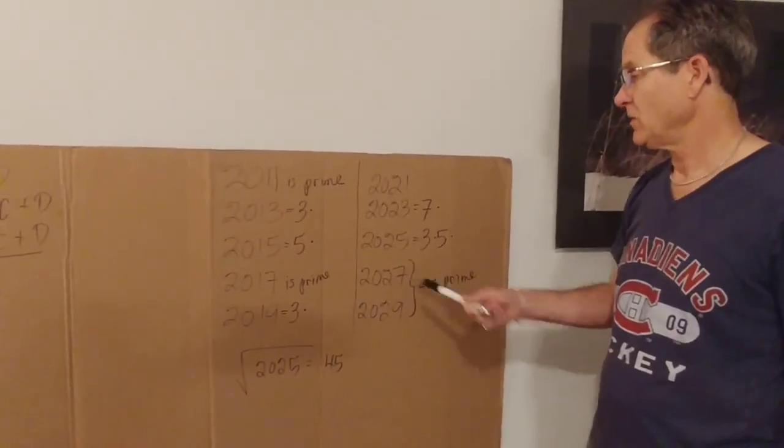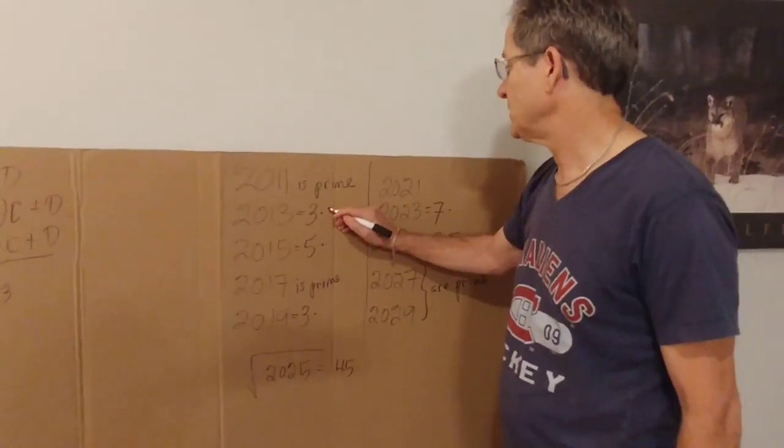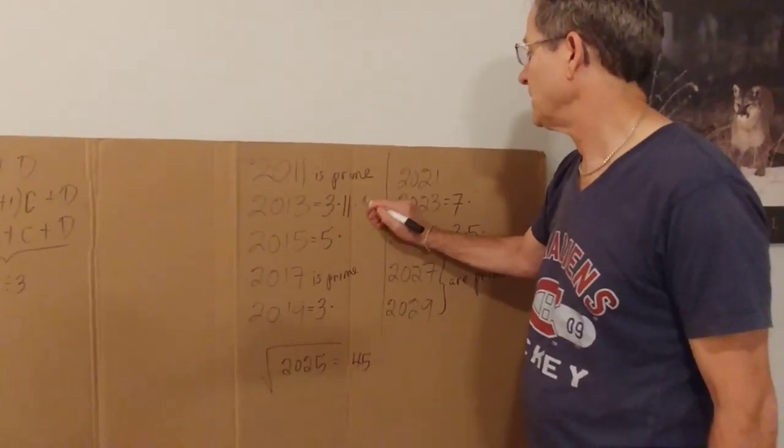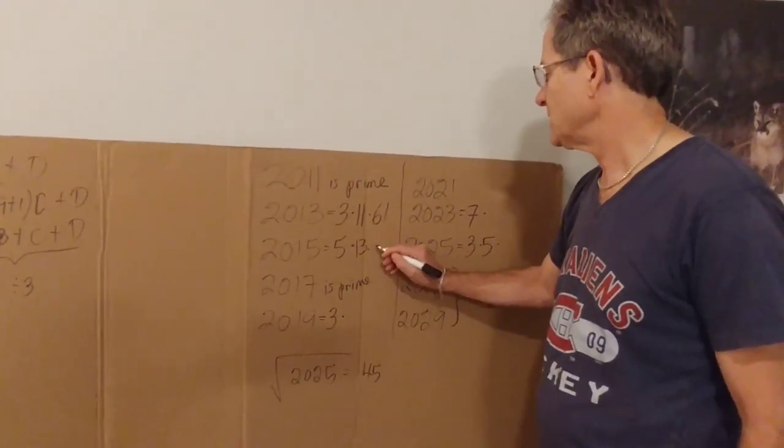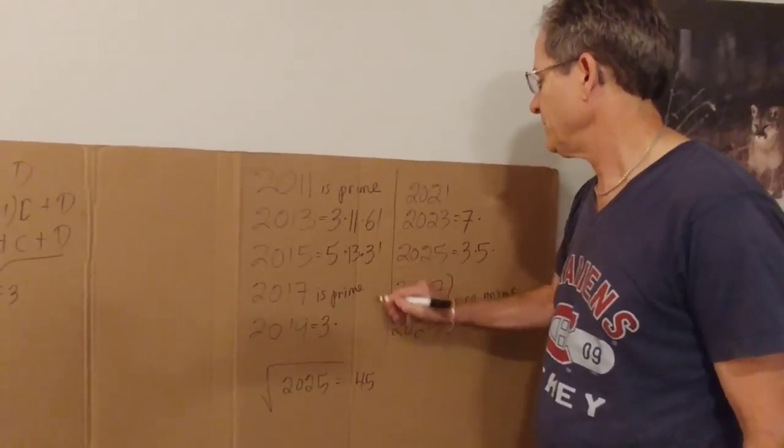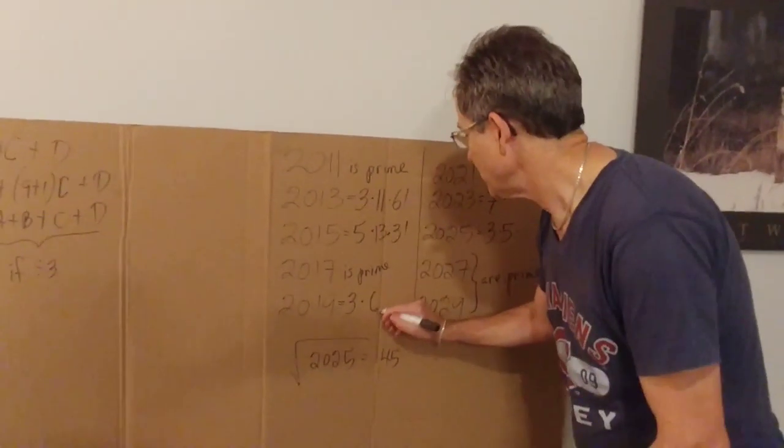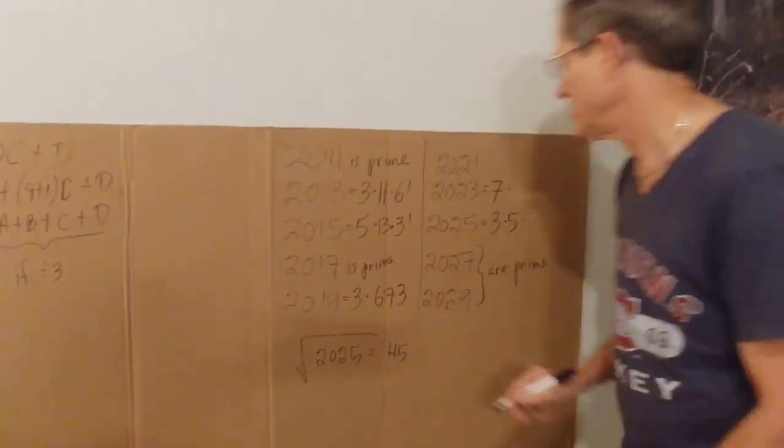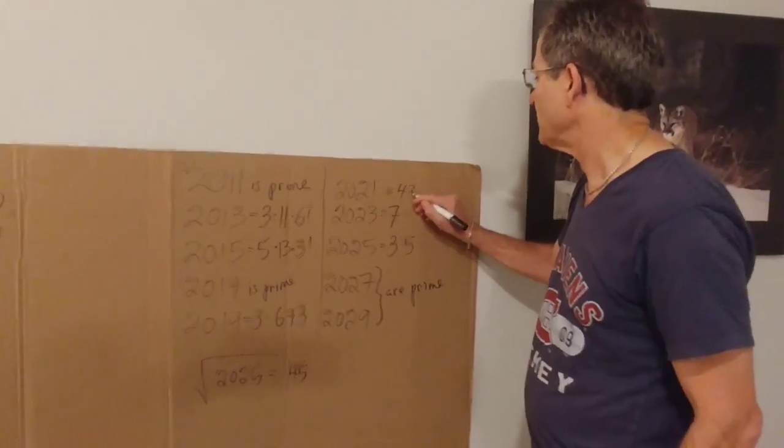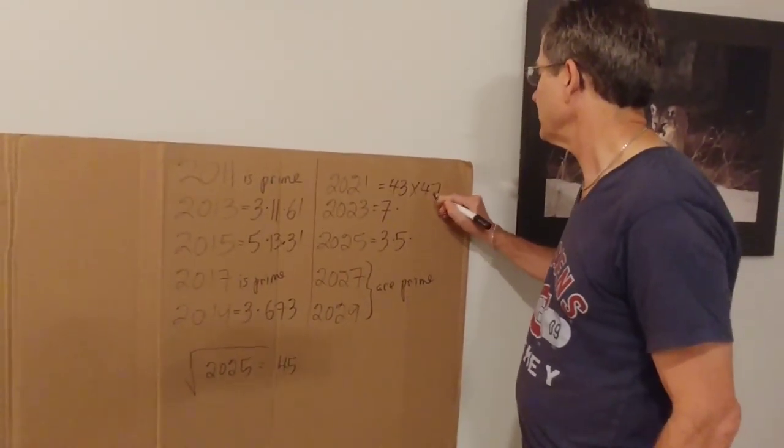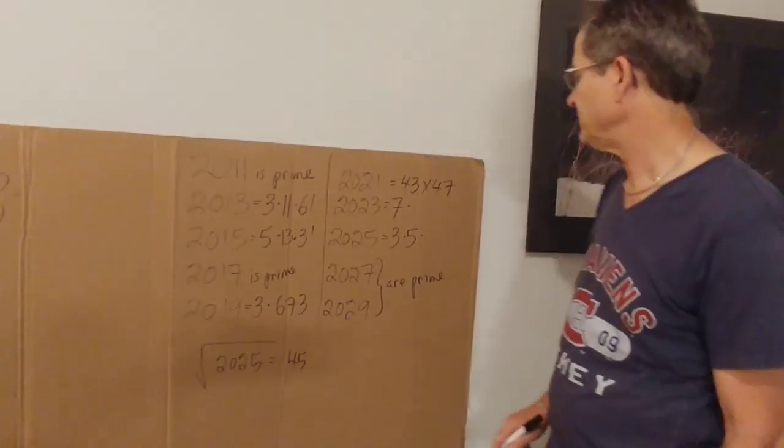Now as it turns out, 2013 is 3 times 11 times 61. 2015 is 5 times 13 times 31. 2019 is 3 times 673, 673 being a prime number. 2021 is 43 times 47, so you see we find the 43 before we get to 45. 2023 is 7 times 17 squared, and as I mentioned, 2025 is 45 squared.